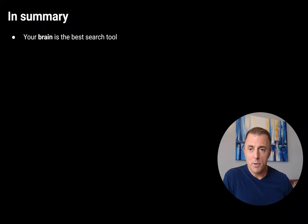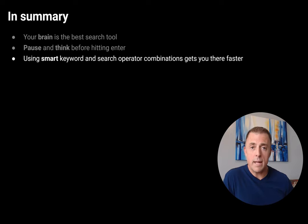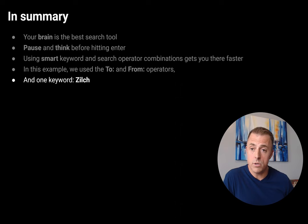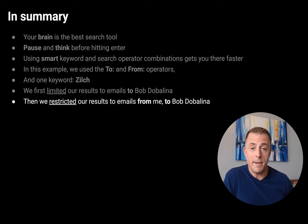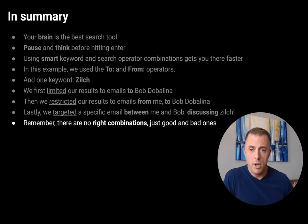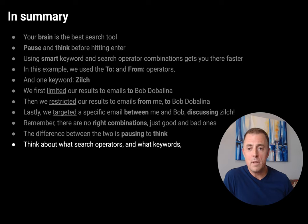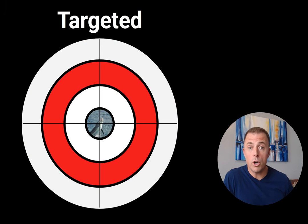In summary, your brain is the best search tool — pause and think before hitting the enter key. Using smart keyword and search operator combinations gets you to done faster. In this example, we used "to:" and "from:" search operators and one keyword, "zilch." We first limited results to emails to Bob Dabalina, then restricted to emails from me to Bob Dabalina, and finally targeted a specific email between me and Bob discussing zilch. Remember, there are no right combinations, just good and bad ones. The difference is pausing to think about what operators and keywords, when combined, take you from unlimited to targeted results.